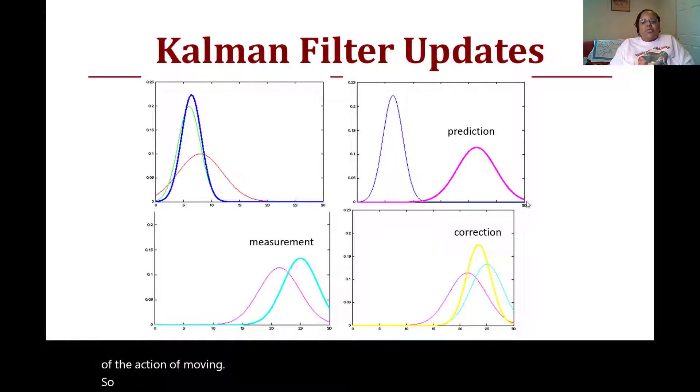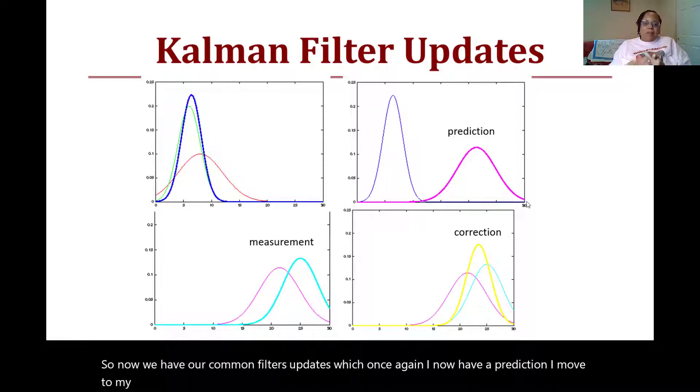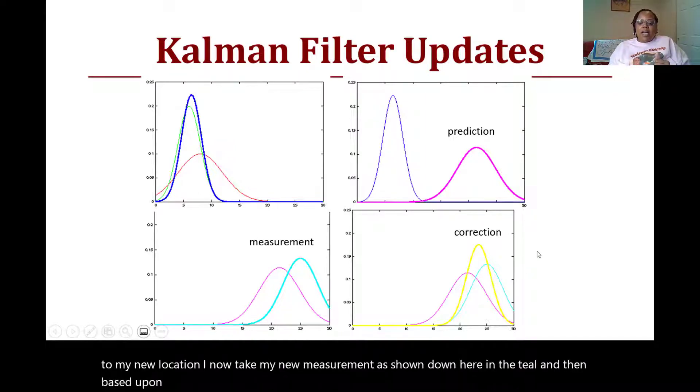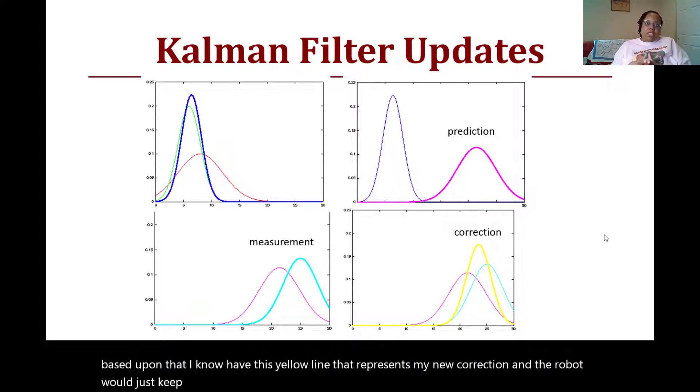Now we have our Kalman filter updates, which once again: I have a prediction, I move to my new location, I now take my new measurement as shown down here in the teal, and then based upon that I now have this yellow line that represents my new correction. The robot will just keep iterating over this until in theory it localizes at its new position.